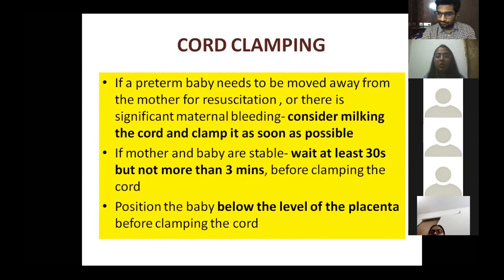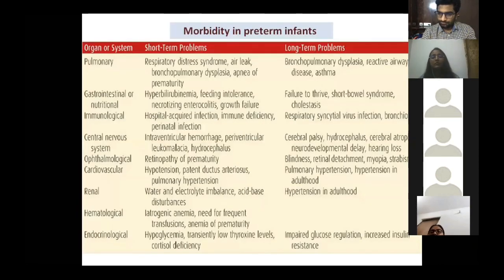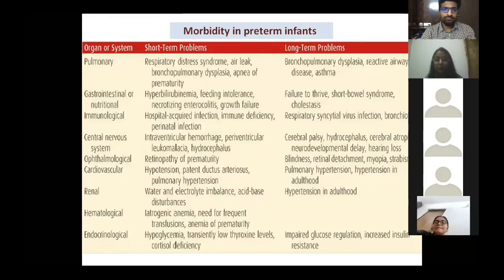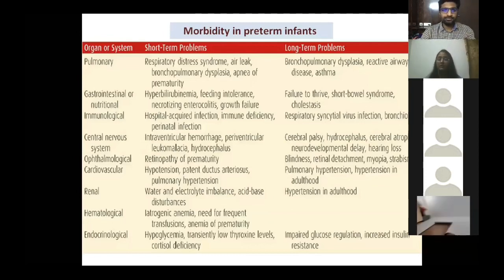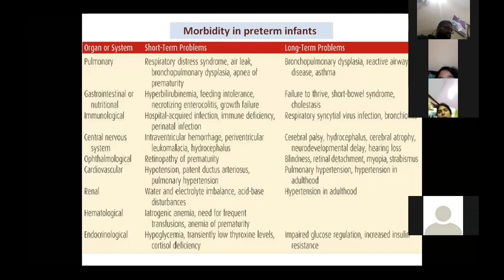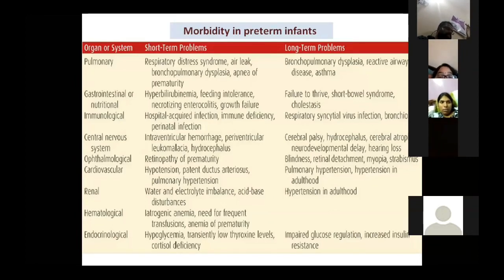Short-term morbidities of preterm infants include respiratory distress syndrome, bronchopulmonary dysplasia, apnea of prematurity, hyperbilirubinemia, NEC, hospital-acquired infections due to low immunity, intraventricular hemorrhage, periventricular leukomalacia, retinopathy of prematurity, patent ductus arteriosus, electrolyte imbalance, and hypoglycemia. Long-term problems include bronchopulmonary dysplasia, failure to thrive, allergic disorders, RSV infections, asthma, cerebral palsy, neurodevelopmental delay, learning and hearing disability, blindness, retinal detachment, and increased risk of future insulin resistance.